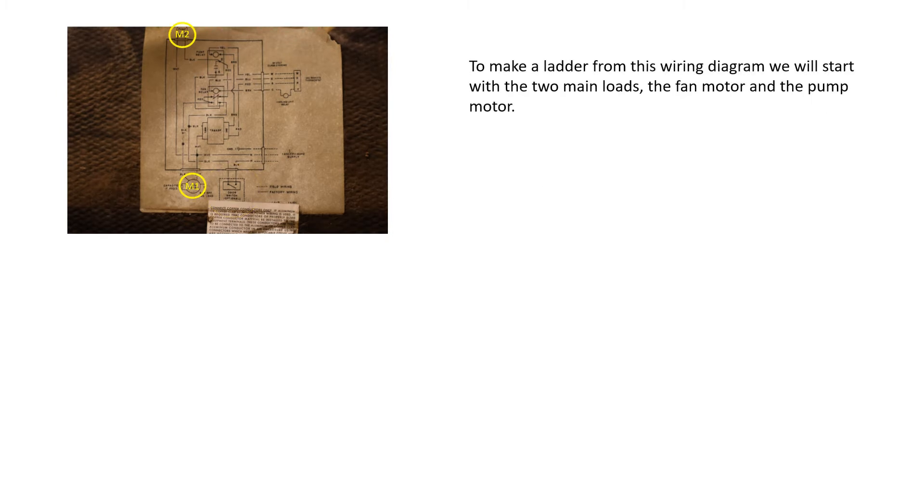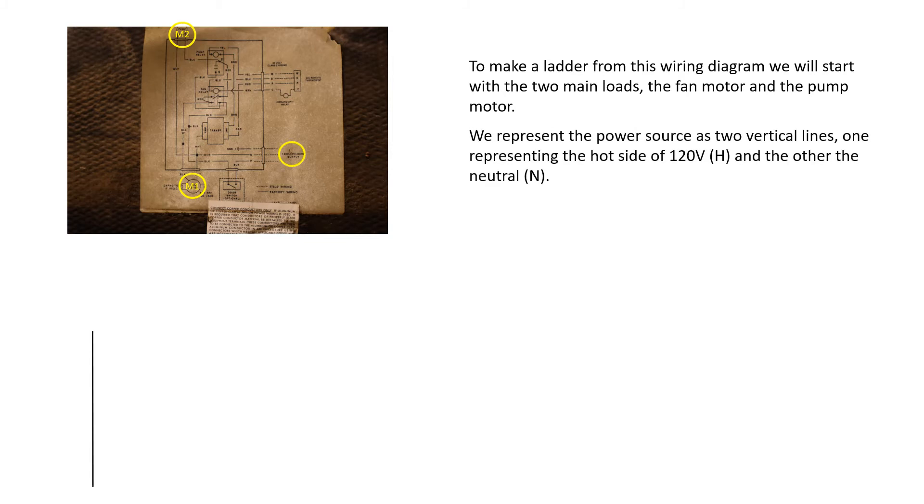To make a ladder from this wiring diagram, we will start with the two main loads, the fan motor and the pump motor. We represent the power source as two vertical lines, one representing the hot side of 120 volts and the other the neutral.